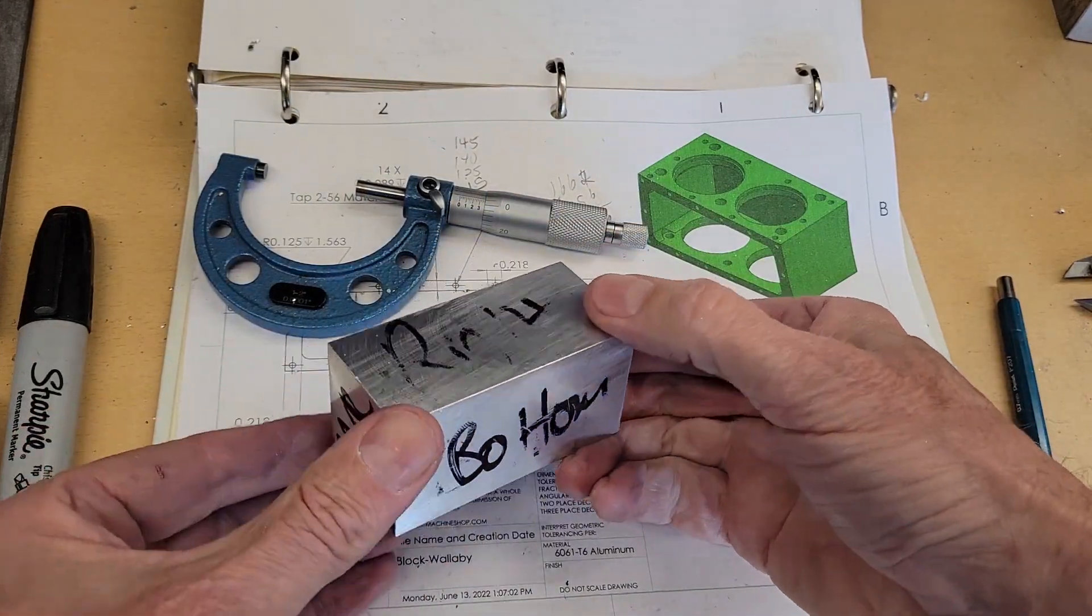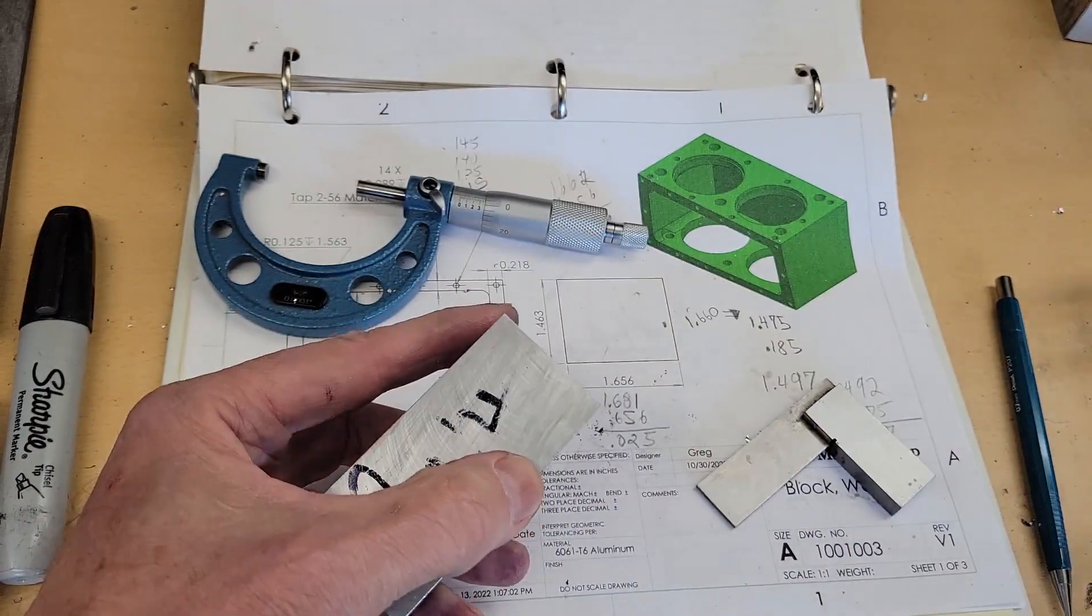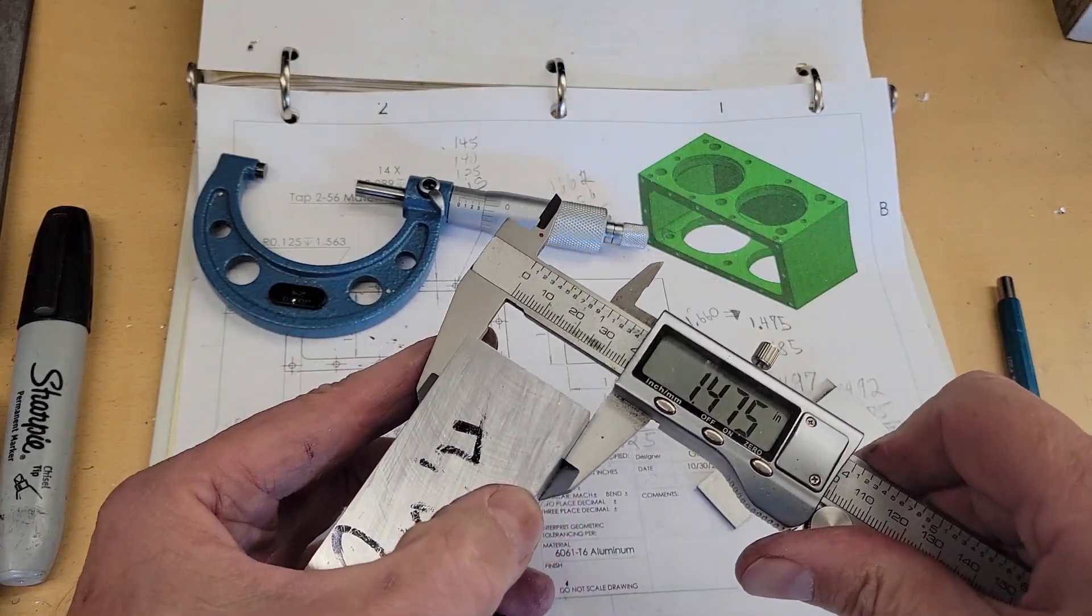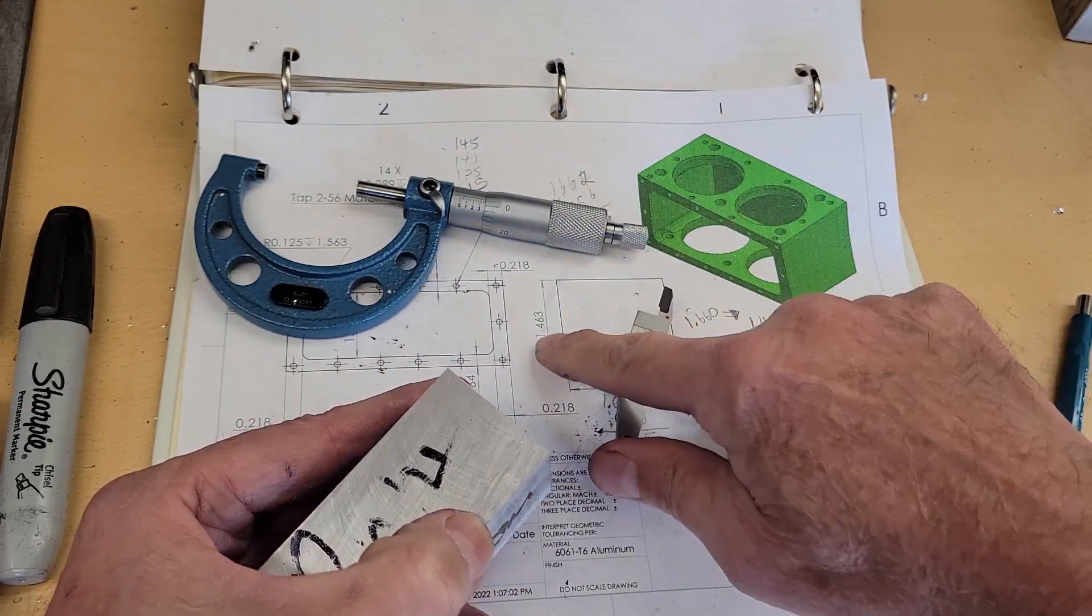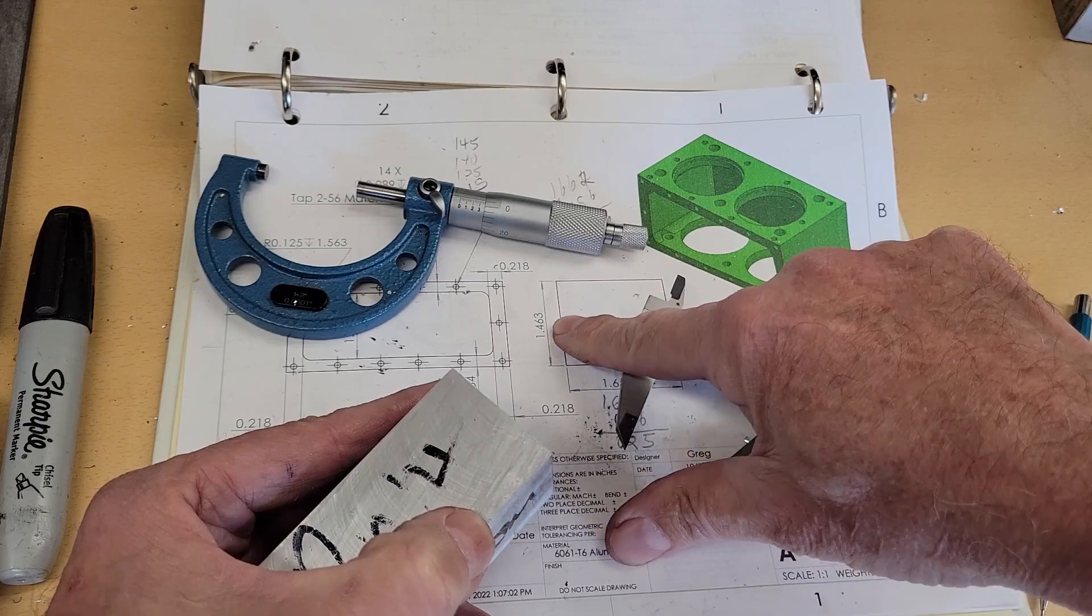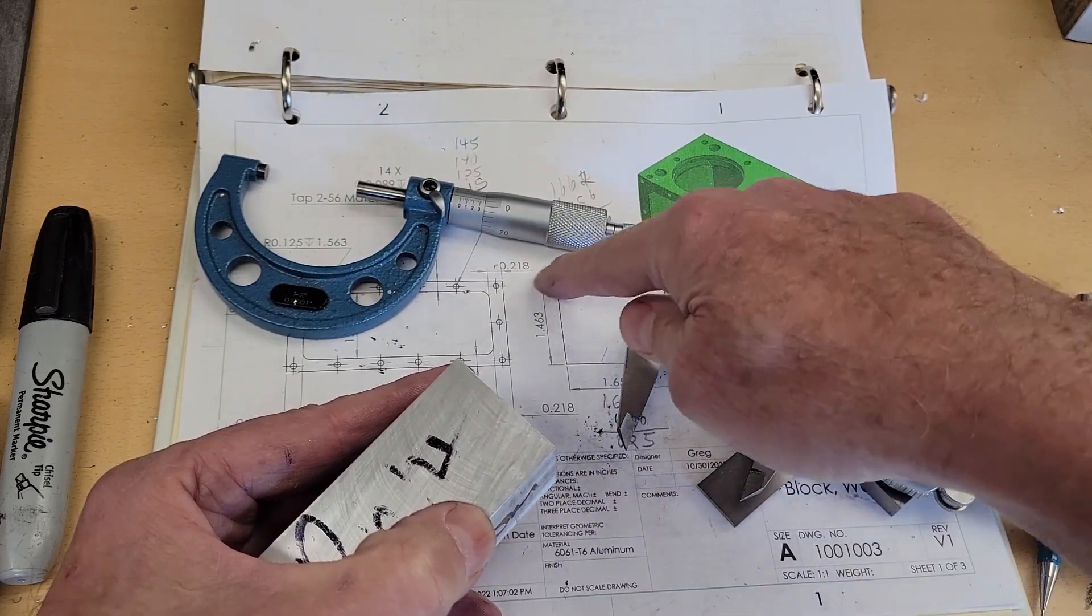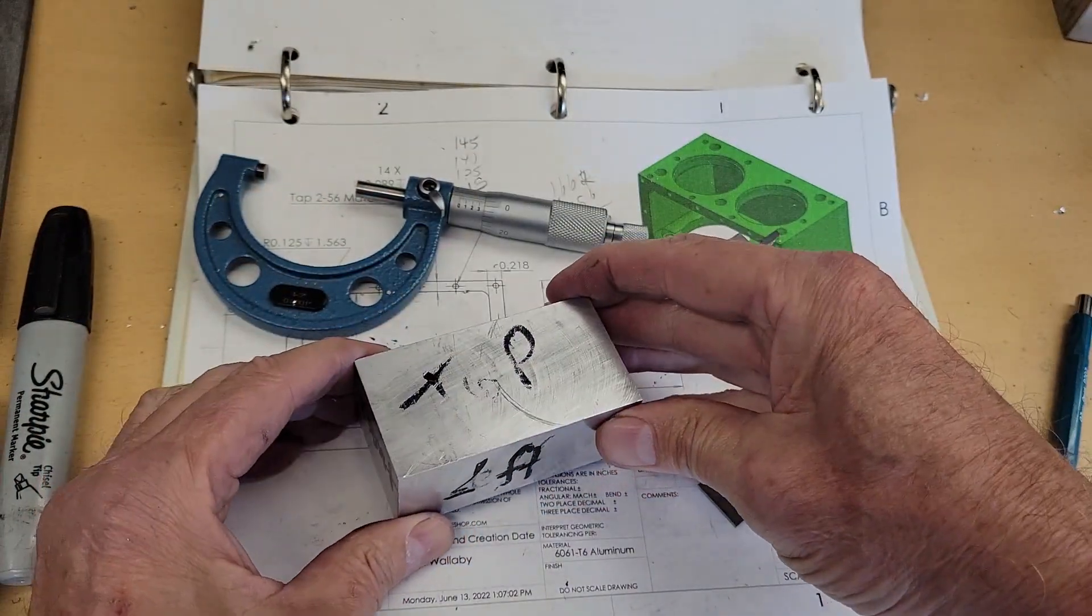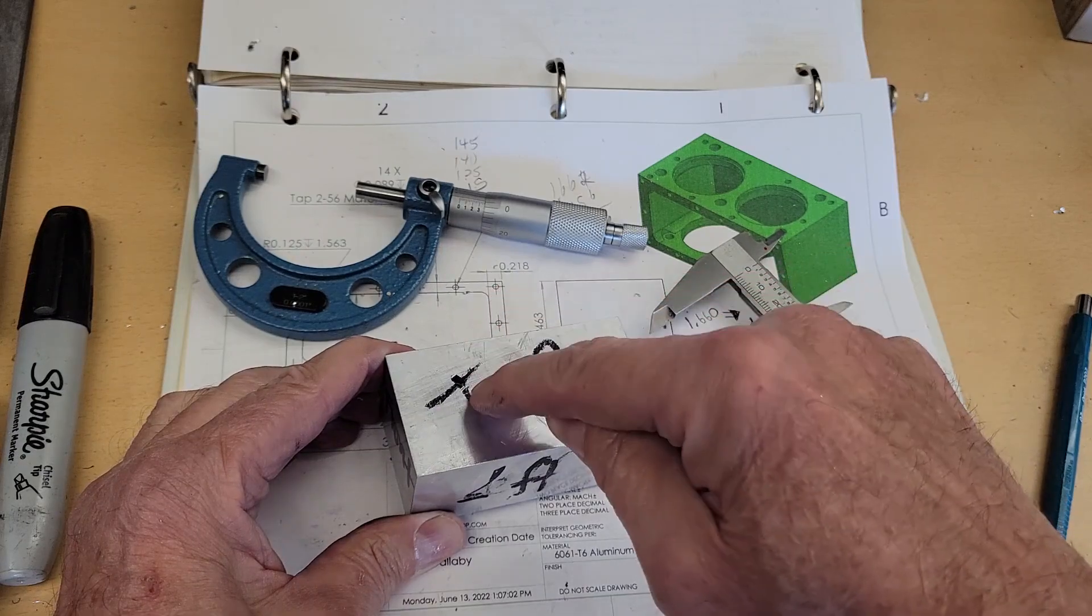Okay so there's our square block. Let's see, 1475 height is 1463 so we've got at least 10 thousandths extra material on the top.